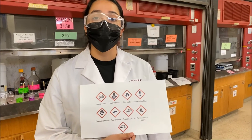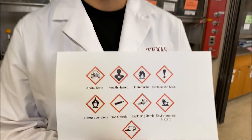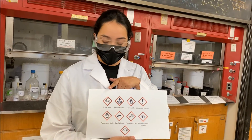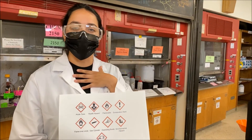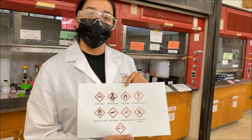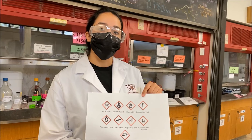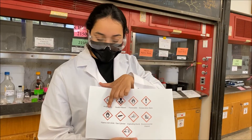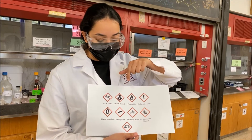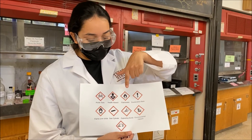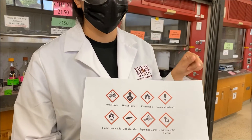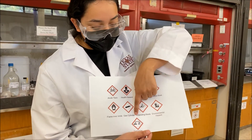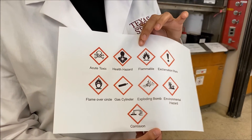These are the specific hazard pictograms you can find on chemicals. If you want to learn more, you can go to OSHA.gov. The skull and crossbones indicates acute toxicity. The person with a burst on their chest is a health hazard. A flame indicates a flammability hazard. An exclamation mark is a non-specific hazard requiring you to read the chemical directions. The circle with a flame on top is an oxidation hazard. A gas cylinder indicates pressure. An exploding bomb is an explosive hazard. The dead tree and fish symbol is an environmental or marine hazard. And the hand with a chemical is a corrosion hazard.